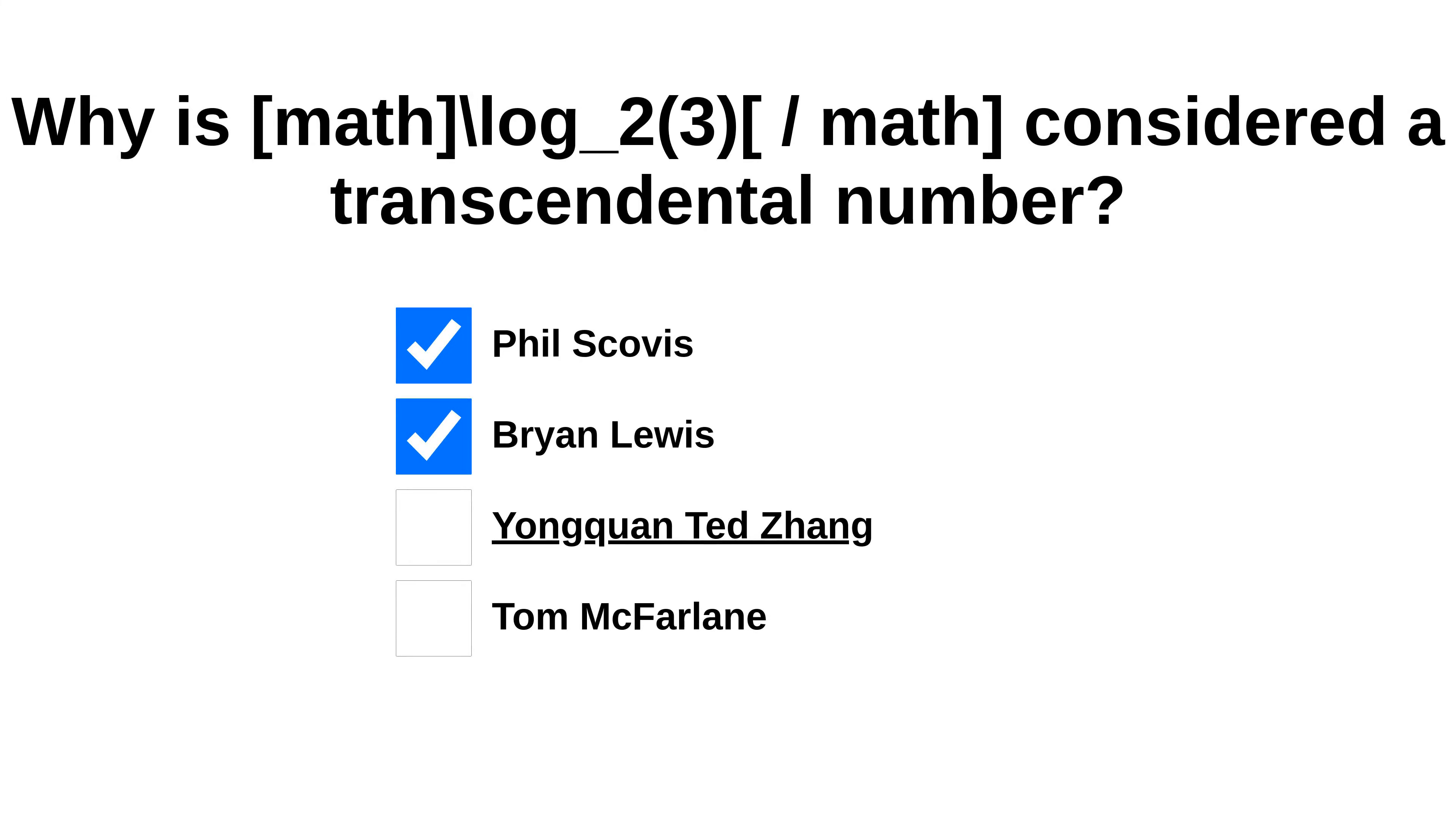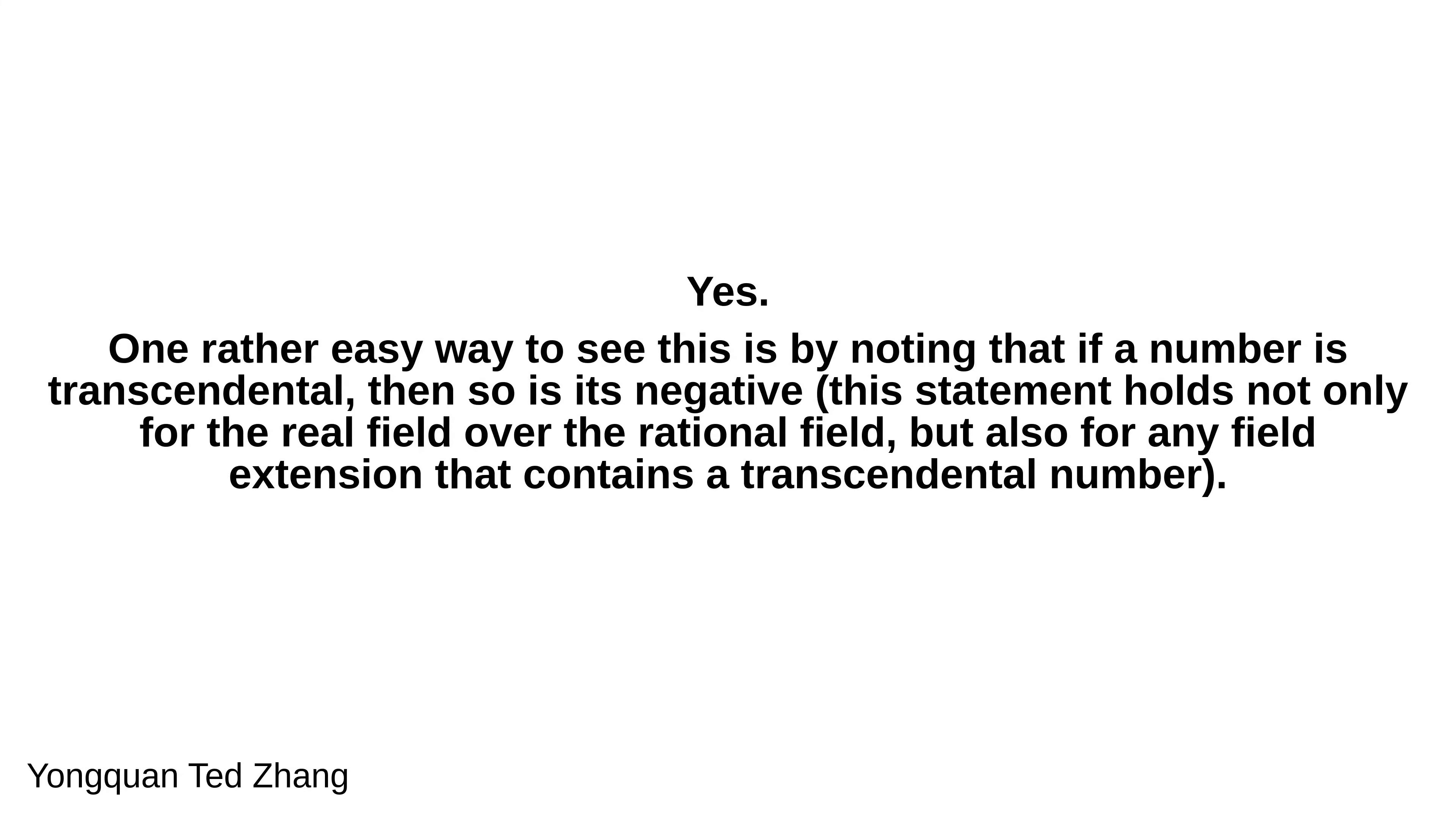We will continue with Yongquan Ted Zhang's answer. Yes. One rather easy way to see this is by noting that if a number is transcendental, then so is its negative. This statement holds not only for the real field over the rational field, but also for any field extension that contains a transcendental number. Then the sum of these two will be zero, which is not transcendental.